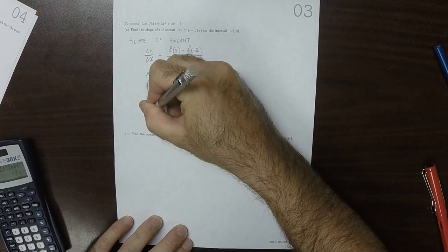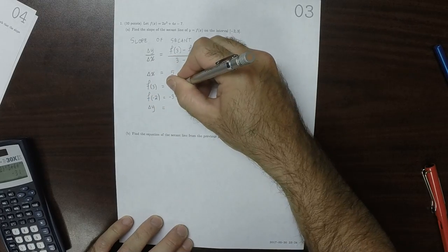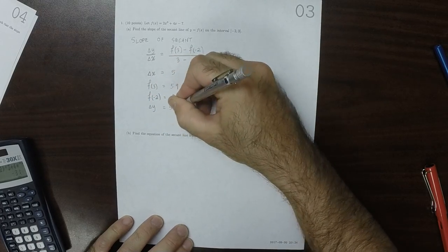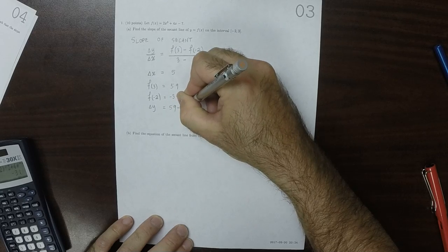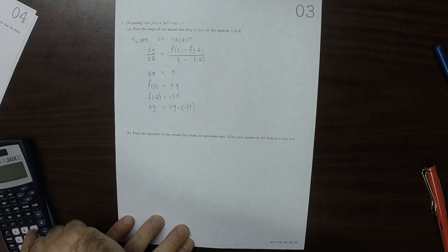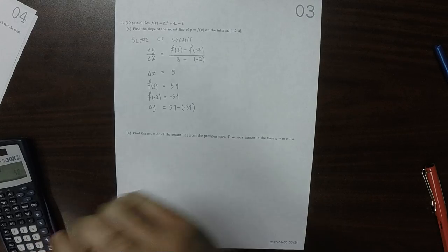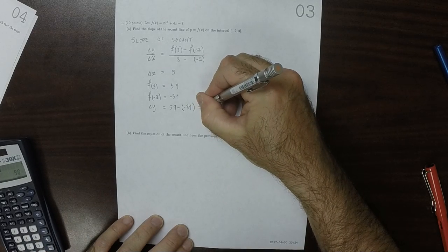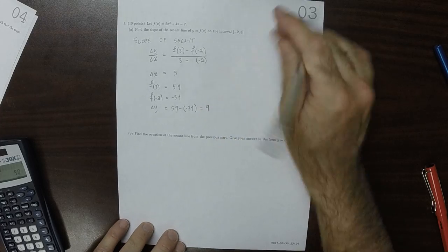And therefore the change in y is 59 minus negative 31, so 59 plus 31 is 90.